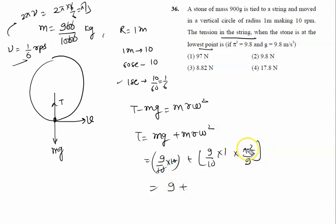Plus π² is also approximately 10, so 10 is cancelled, this is 9, so this will be 1, so it will be 10 newtons. So it is an approximation because we have taken π² as 10.